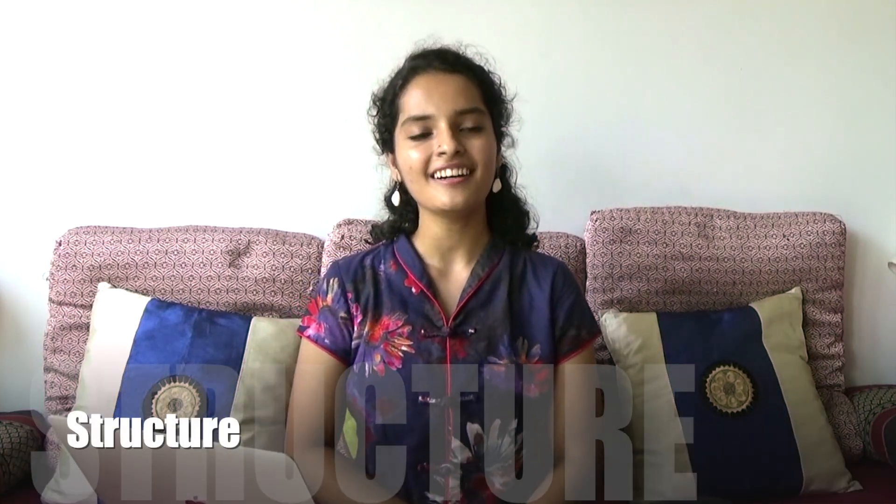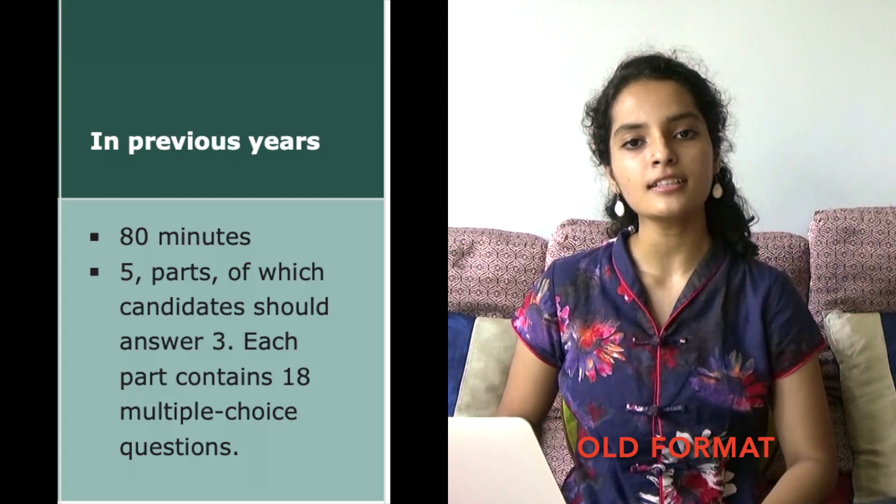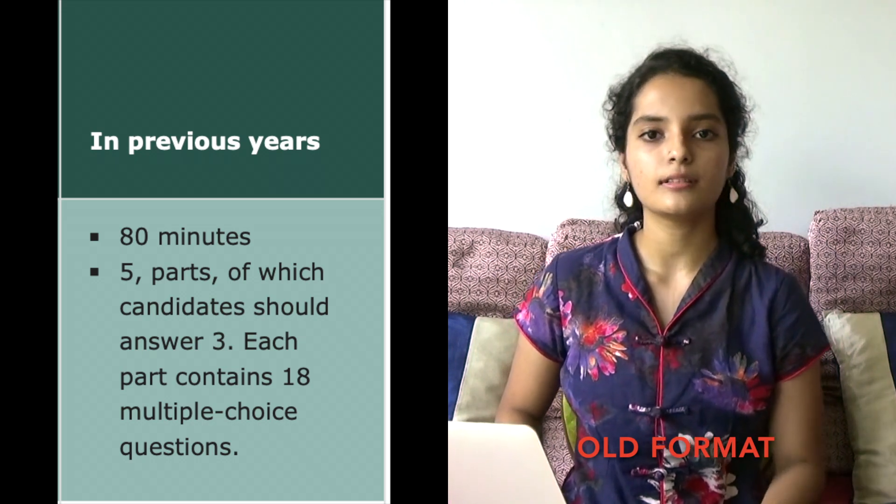Coming to the structure of the ENSA: I was actually really surprised to see that they've changed the format of the ENSA quite significantly from last year, which was when I took it. The ENSA is split into two sections — Section 1 and Section 2. In the previous years, Section 1 was 80 minutes and was a completely MCQ-based section with five parts: A, B, C, D and E. Part A was mathematics, which was compulsory. Apart from Part A, we had to pick two extra parts to answer. So I did Parts C and D, which were chemistry and biology. There were 18 MCQ questions per part, so we had a total of 80 minutes to complete all three parts.